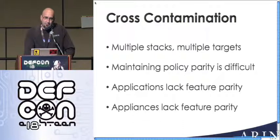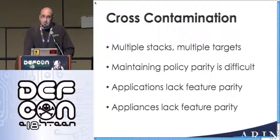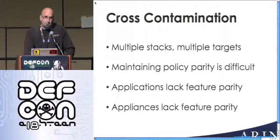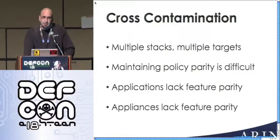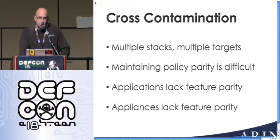Back to dual stack — it can cause problems from a complexity standpoint. If you have multiple stacks, you have multiple targets, basically multiple problems. You have a single host with a V4 address and at least one V6 address, maybe more — all of these need to be in the right access control lists, the right firewall rules, monitored properly. That's really difficult to maintain across one protocol; it's even harder across two. Maintaining policy for routing or ACLs — all of that is very difficult.